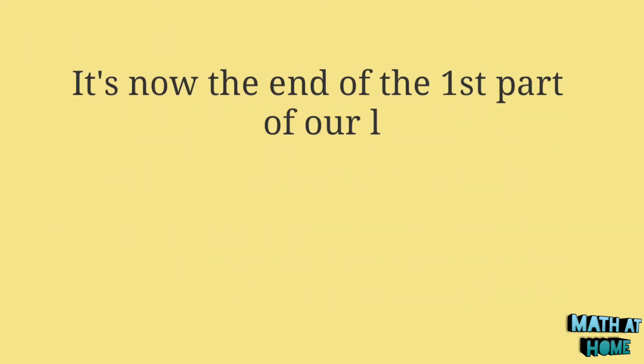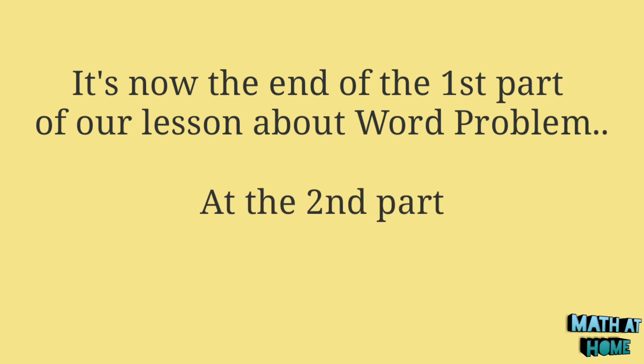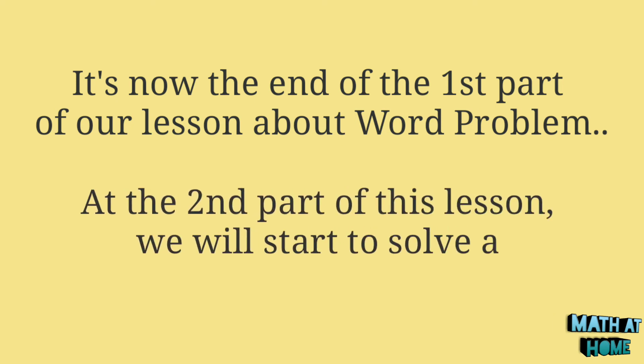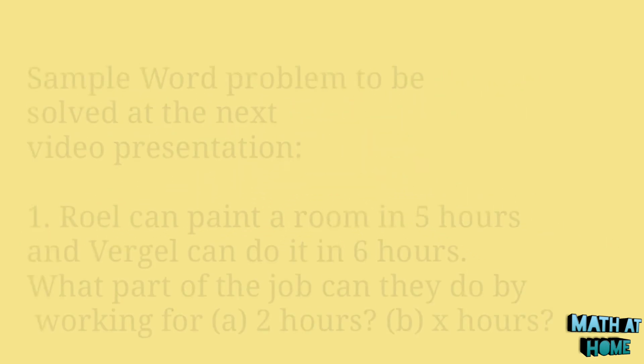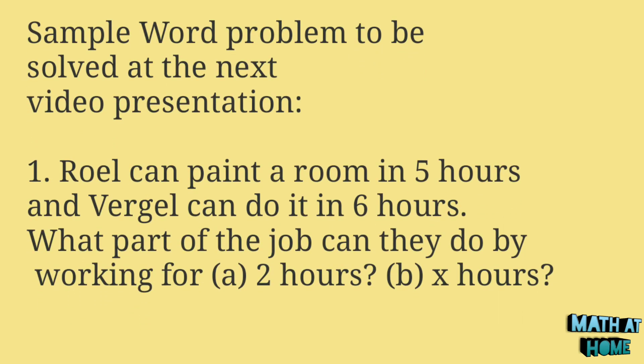This is the end of the first part of our lesson about work problems. In the second part of this lesson, we will start to solve a word problem. Sample word problem to be solved in the next video: Rowell can paint a room in 5 hours and Virgil can do it in 6 hours. What part of the job can they do by working for A) 2 hours and B) x hours?